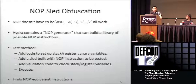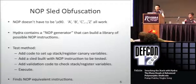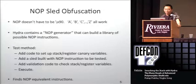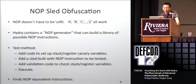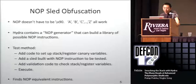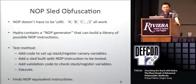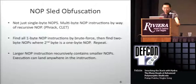No-op sled obfuscation: no-ops don't have to be hex 0x90. The CLET engine, for example, uses ASCII characters A through Z — those characters are actually valid no-ops. You can create a group of these, put them in front of the payload, and execute. Hydra contains a no-op generator that builds a library of all possible no-op instructions of multiple byte sizes. We set up canary variables on the stack and registers, build a sled using a candidate instruction, then validate those canaries at the end. Using this, we found approximately 2 million no-op instructions.